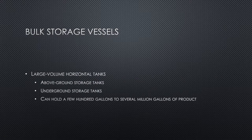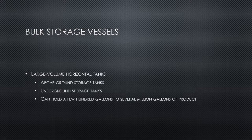Large volume horizontal tanks are common above-ground storage tanks. Underground storage tanks can hold a few hundred gallons to several million gallons of product, usually made of aluminum, steel, or plastic.